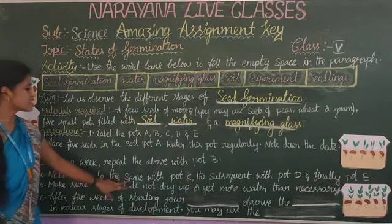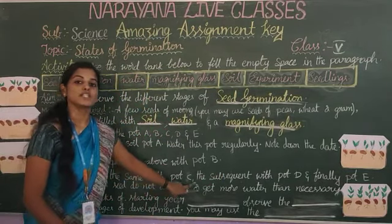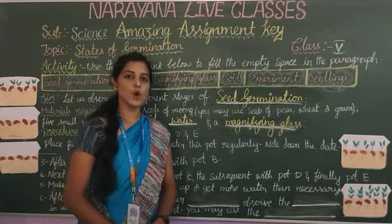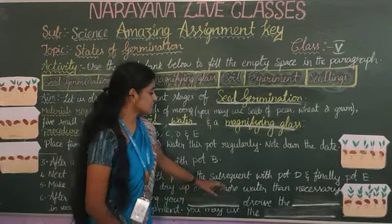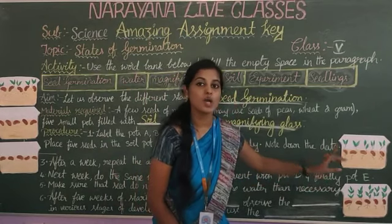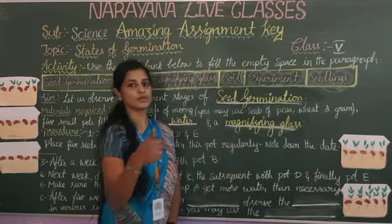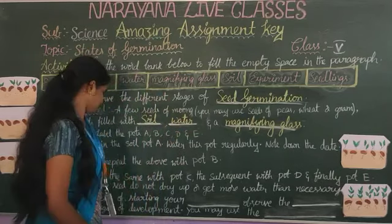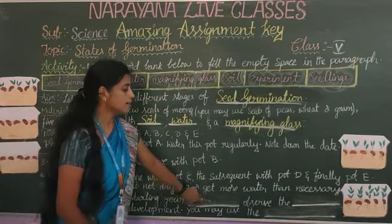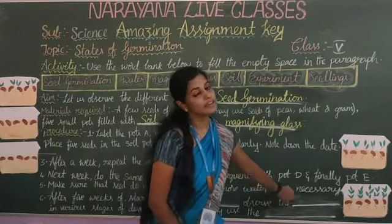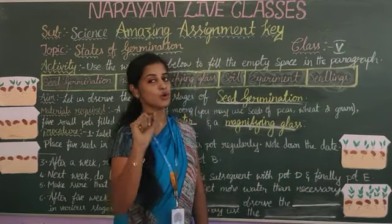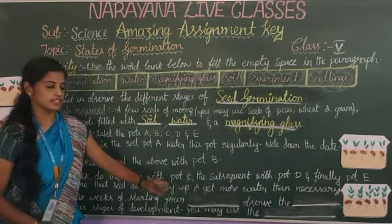Next week, do the same with pot C. Repeat the same process for pot C, then subsequently for pot D and finally pot E. Make sure the seeds do not dry up or get more water than necessary. Water is very very important for germination of a seed, so don't forget to pour some water each week.